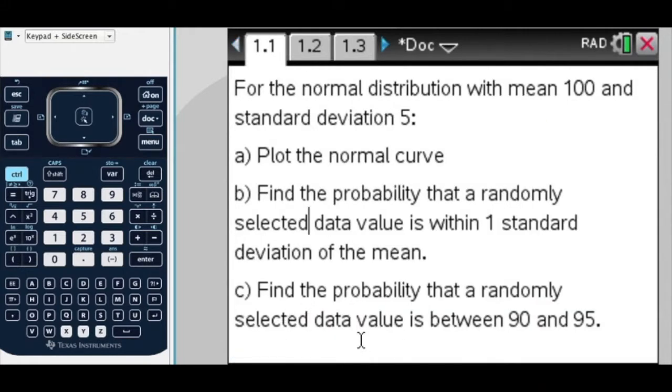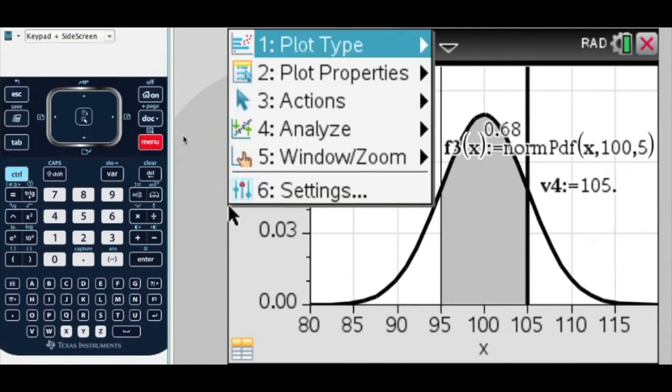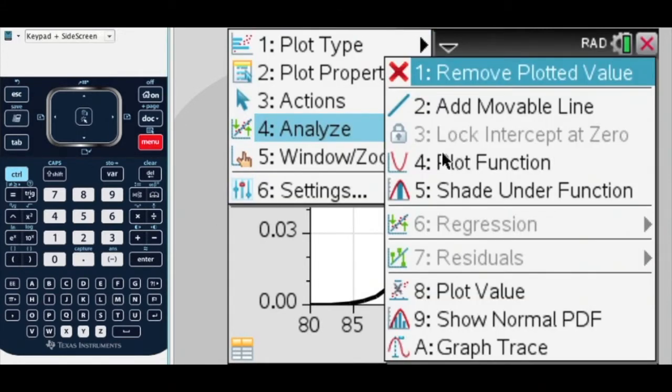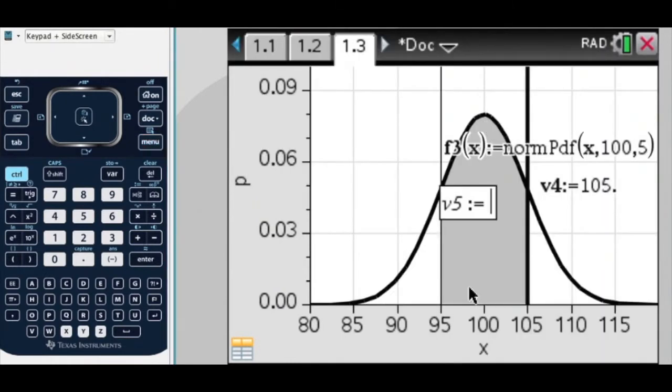Find the probability that a randomly selected data value is between 90 and 95. So, now, I better draw another vertical line at 90. Analyze, plot value, and 90.